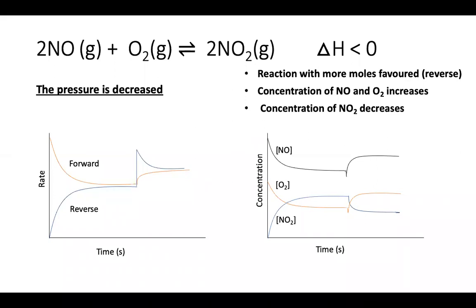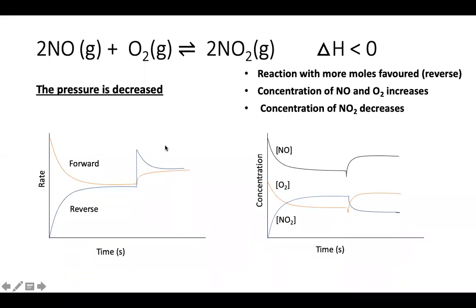If a catalyst is added, on the rate versus time graph both the forward and reverse rates increase equally and become flat — both go up proportionately. On the concentration versus time or moles versus time graph, a catalyst only speeds up the time to reach equilibrium; the concentrations of reactants and products stay the same, so the lines remain flat.